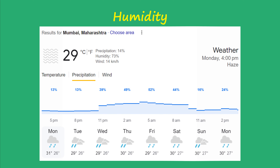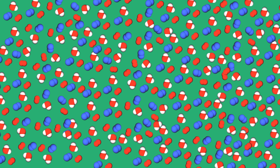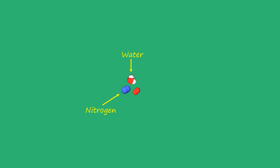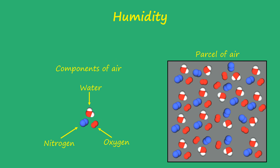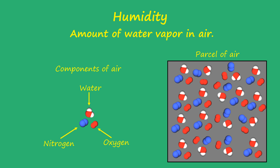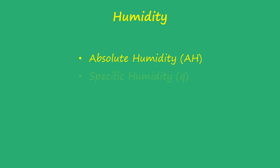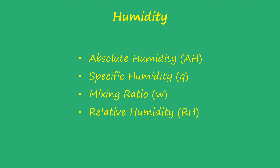So, what is humidity? To understand that, let's take a parcel of air and zoom into it. Apart from the minor percentage of gas and dust particles, the air mainly consists of water vapor, nitrogen, and oxygen. Humidity can be defined as the amount of water vapor present in the air. But the term 'amount' is not well defined, so scientists use more refined definitions such as absolute humidity, specific humidity, mixing ratio, relative humidity, etc. This tutorial is all about defining and solving examples related to these definitions.